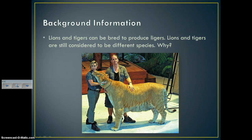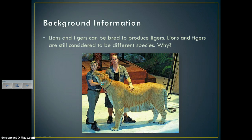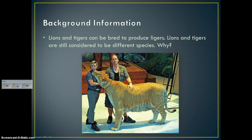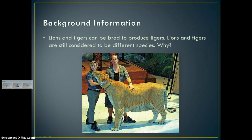What about lions and tigers — ligers or tigons? We recently found out that ligers can produce more ligers and tigons can produce more tigons, so they are fertile. But lions and tigers are still considered to be different species. Why? Because the second part of our definition requires reproduction in their natural habitat. Lions and tigers in their natural settings will never come in contact with one another, so we still consider them different species.